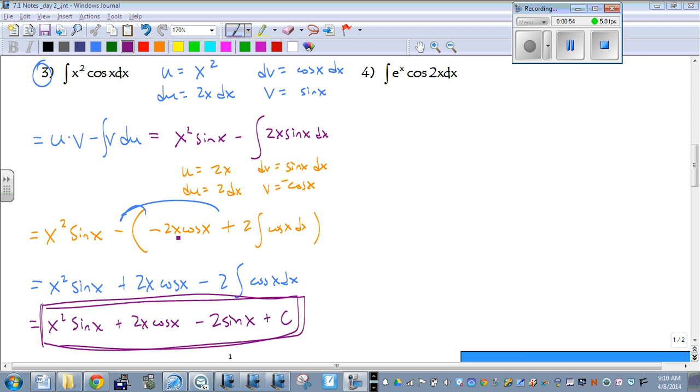So we end up with negative 2x cosine of x, let me multiply these, minus antiderivative of v times du. Well that's negative, so that's why this became a plus, and we kept the constant out in front.